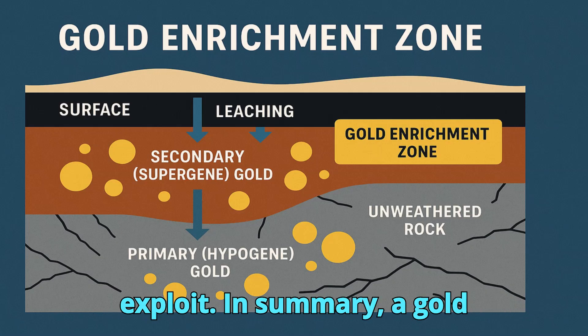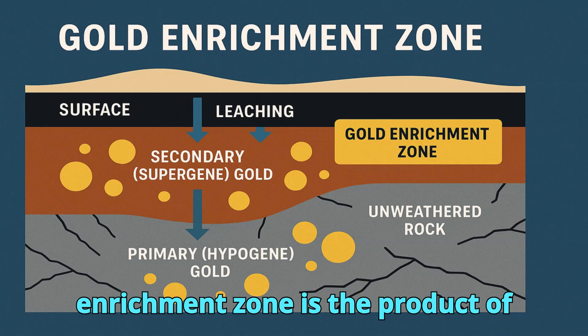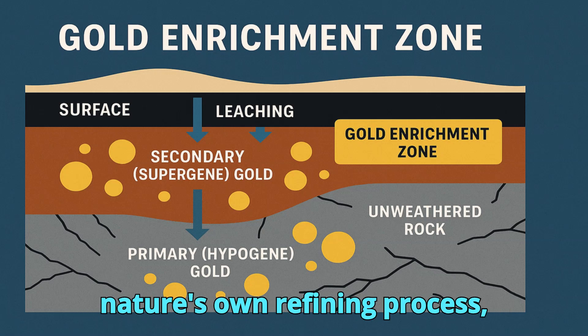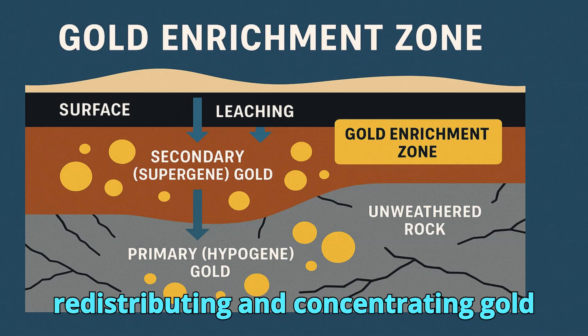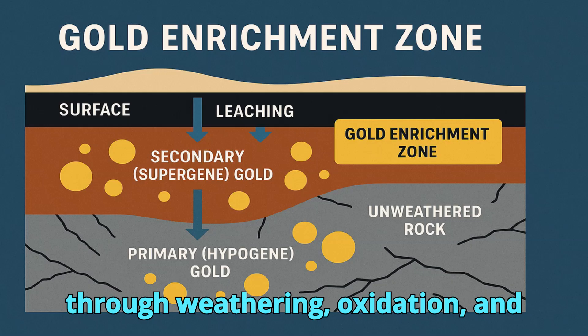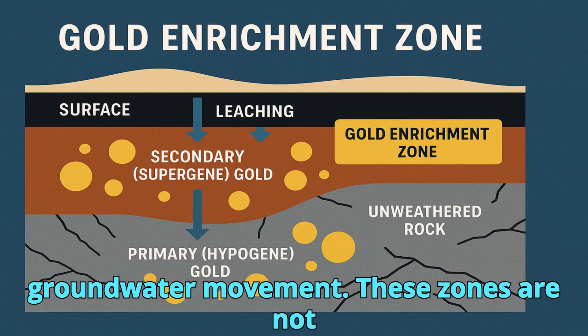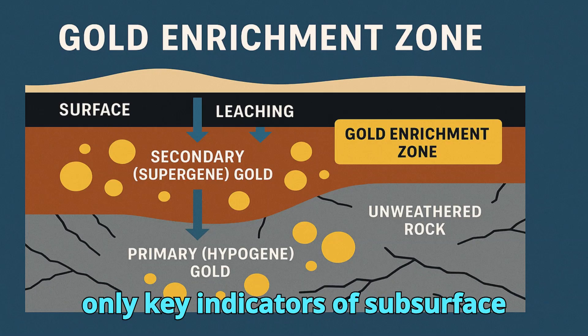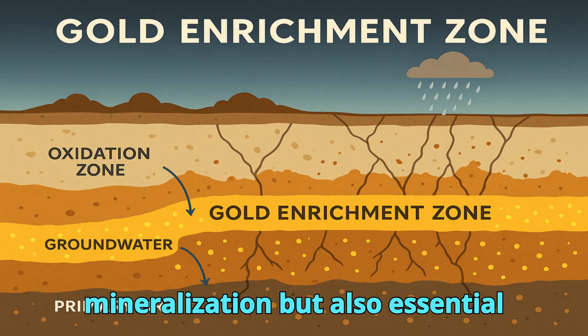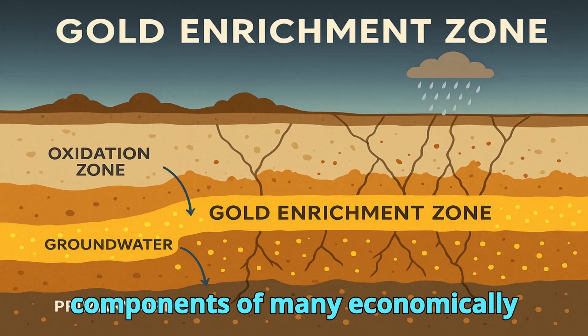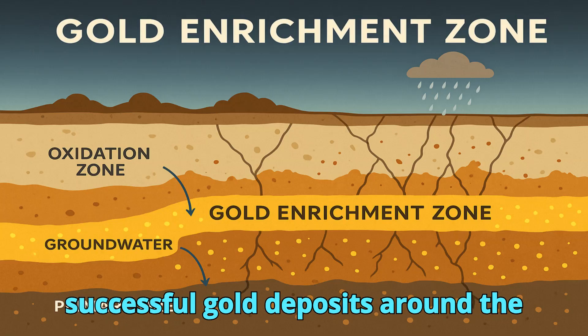In summary, a gold enrichment zone is the product of nature's own refining process, redistributing and concentrating gold through weathering, oxidation, and groundwater movement. These zones are not only key indicators of subsurface mineralization but also essential components of many economically successful gold deposits around the world.